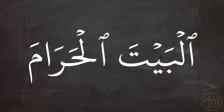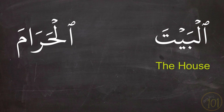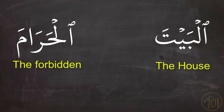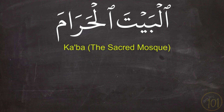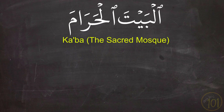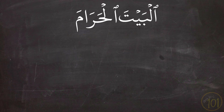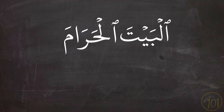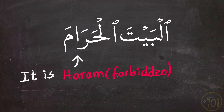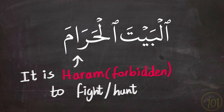Another combination with the same referent is الْبَيْتِ الْحَرَامِ, made up of الْبَيْتِ, meaning 'the house,' and الْحَرَامِ, meaning 'the forbidden.' This also refers to the Kaaba or Al-Haram, as in: جَعَلَ اللَّهُ الْكَعْبَةَ الْبَيْتَ الْحَرَامَ قِيَامًا لِلنَّاسِ. It is called this because it is forbidden to fight or hunt in this city until the Day of Judgment.